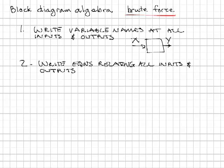The second step is to write an equation relating all the inputs and outputs. This is essentially writing output equals g of s times input. The third step: do the algebra. This is brute force.